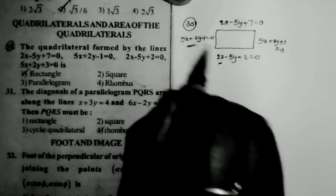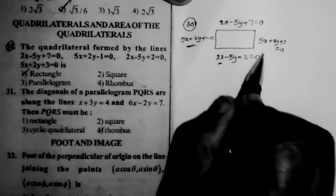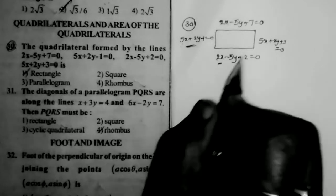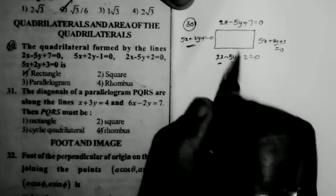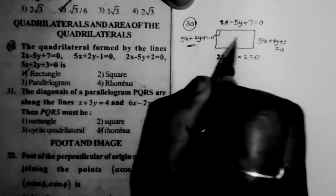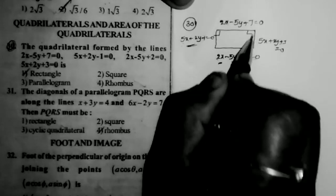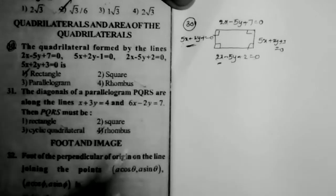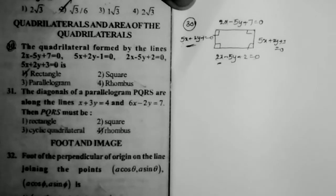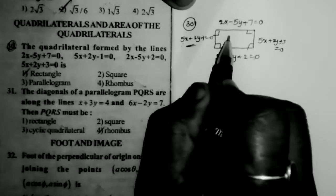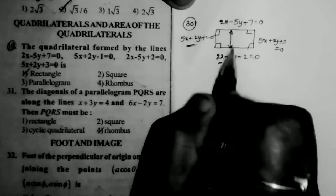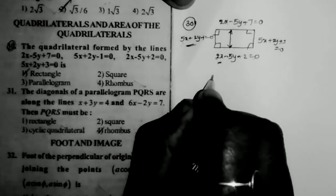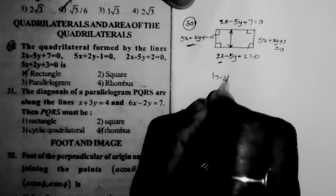Checking A1·A2 + B1·B2 = 0: 10 - 10 = 0, confirming lines are perpendicular. The angles are all 90 degrees, so it is either a rectangle or a square. Now we find the distance between the parallel lines.